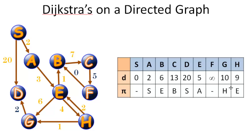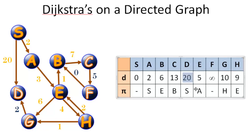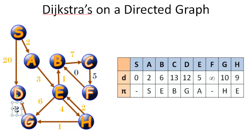Next we'll visit vertex G, the next closest vertex to the source at a distance of ten. G has only one outbound edge going to D. Our current distance to G is ten; adding the edge weight of two gives us D in twelve, which is better than our current distance of twenty. So we update D's distance to twelve with predecessor G. We mark this edge and vertex G as complete.